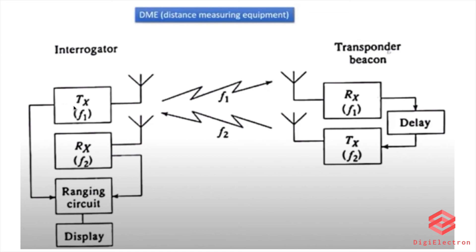One signal is F1. If we transmit F1, we transmit F1. If we transmit F2, we transmit F2. Another signal is that F1 will transmit every time we compare to F2. We have a delay in F2. We can make a total operation.